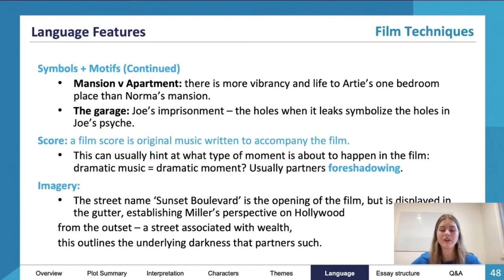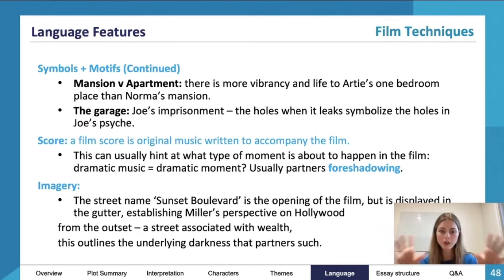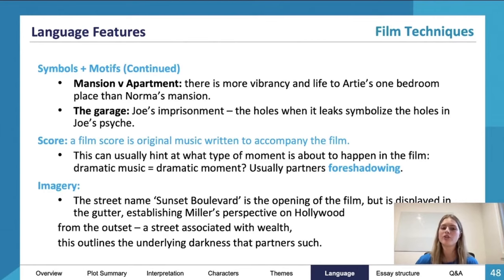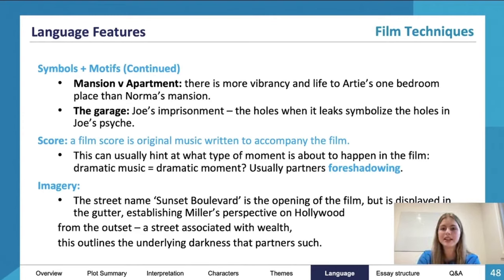The mansion versus the apartment: in Artie's apartment during the New Year's Eve party, it's a one-bedroom apartment but it feels roomy the way Wilder has directed and framed it. Compared to Norma's mansion, which is quite claustrophobic with all those pictures of her — even though it's a bigger house, it's a lot more claustrophobic and eerie. The garage represents Joe's imprisonment, and the holes where it leaks symbolize the holes in Joe's psyche.